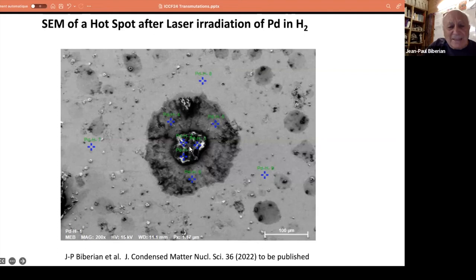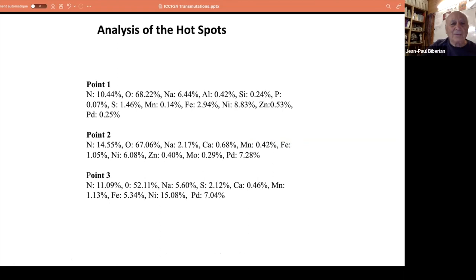When we did the analysis at the center—there's also analysis on the other side, you can see changes—but the most interesting is the center because the center of the laser beam, palladium has almost disappeared: 0.25 percent, 7.28 percent, 7.04 percent. Palladium has disappeared, and all kinds of new elements have appeared: nitrogen—you cannot have nitrogen; splitting the nitrogen gas is impossible, it's a very stable molecule, and there's no nitrogen anyway because there's only hydrogen in the chamber. We have nitrogen, we have all these elements: sodium, aluminum, silicon, phosphorus, sulfur, manganese, iron, nickel—it's amazing—zinc. Again, same types of elements.